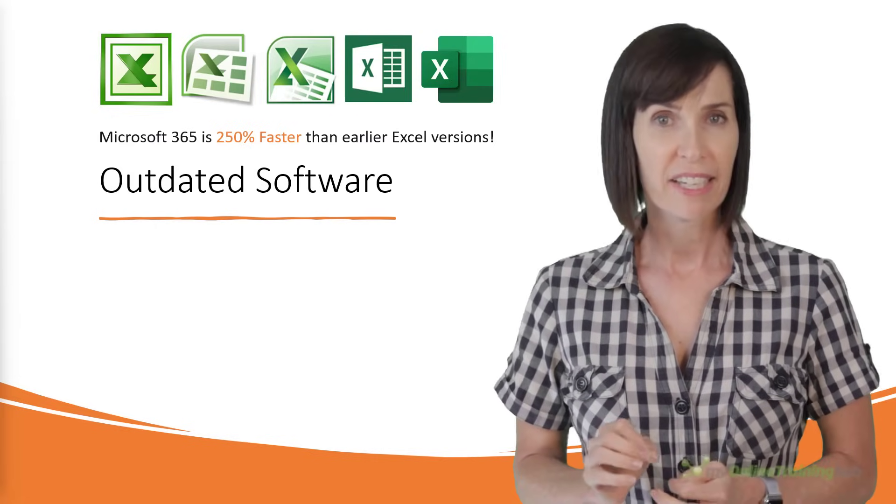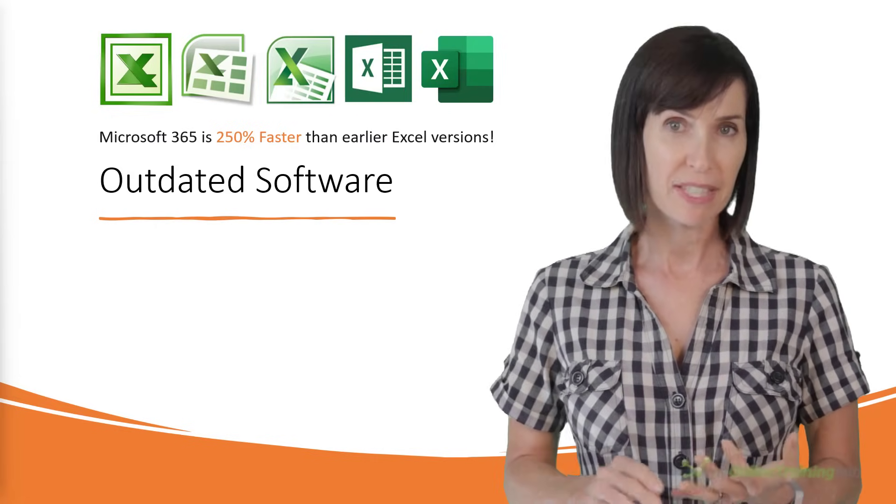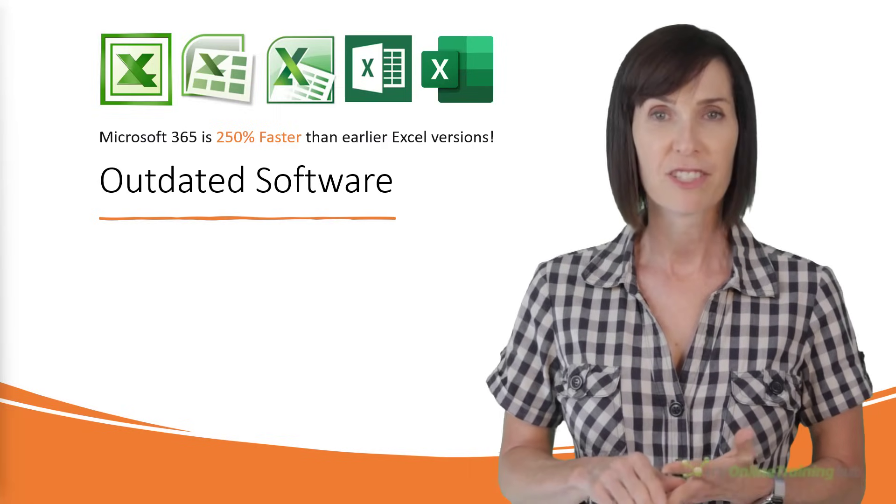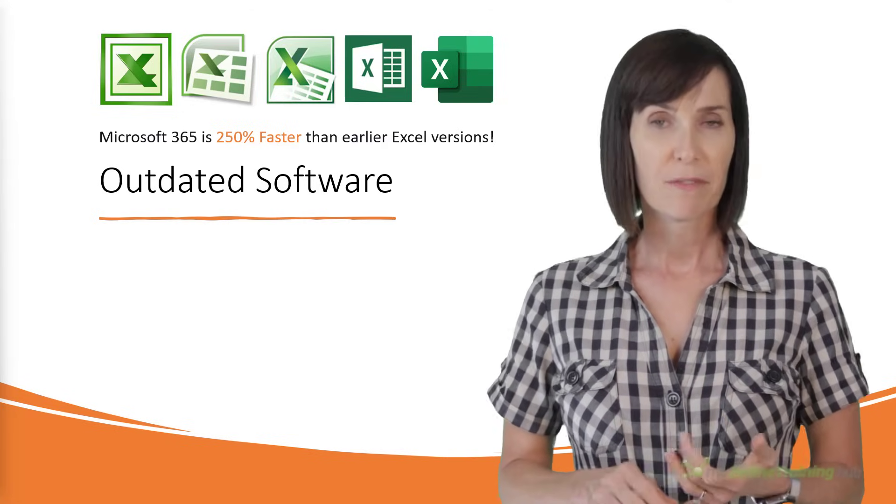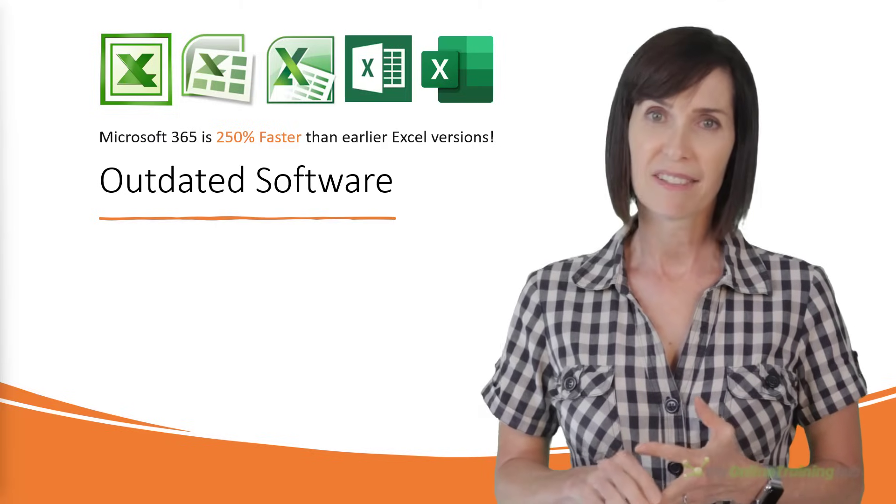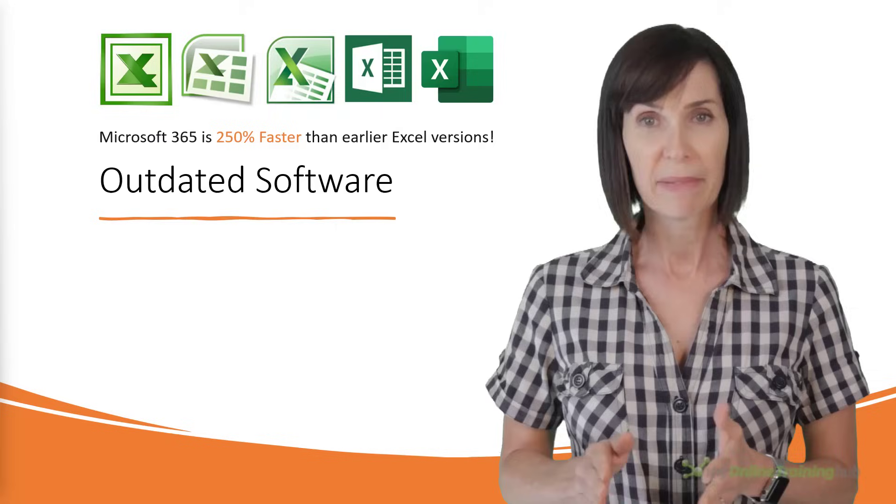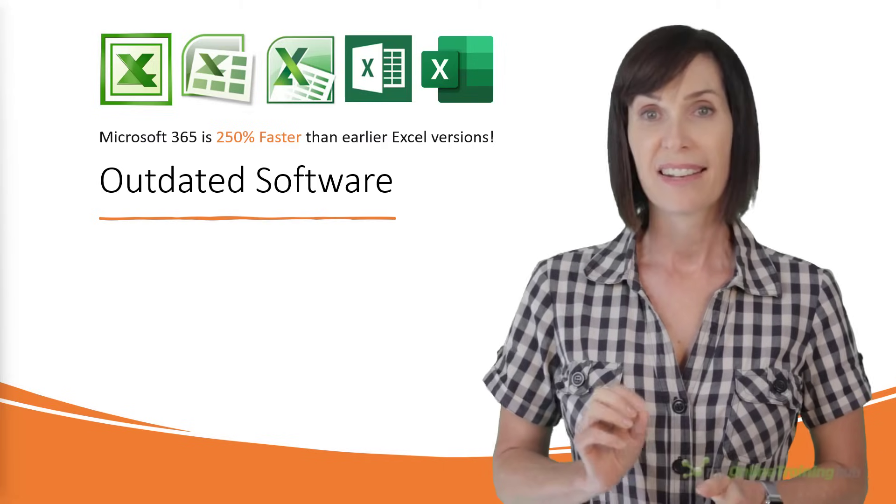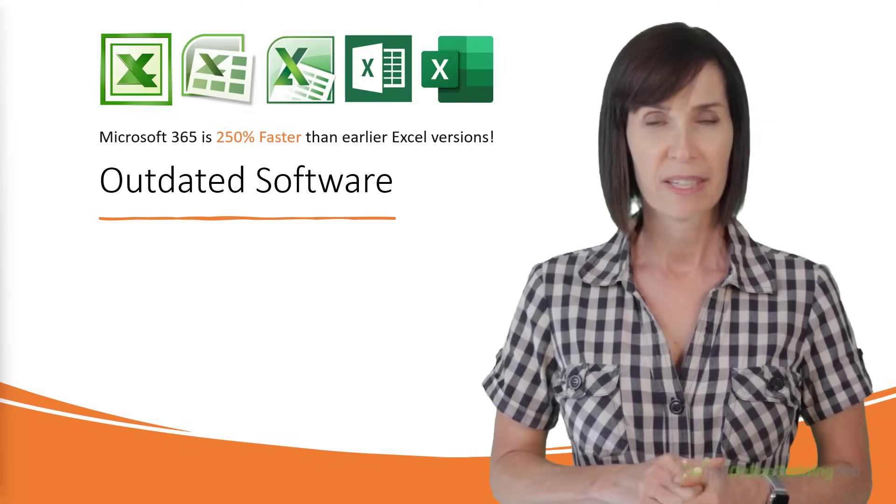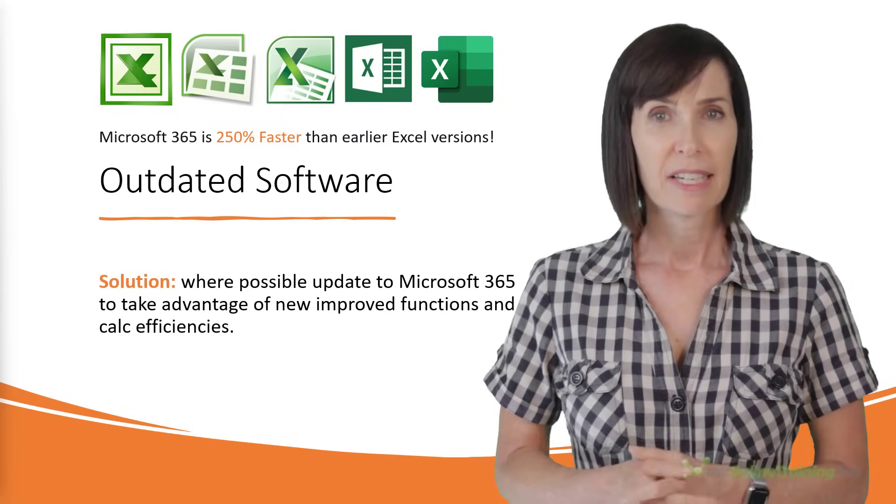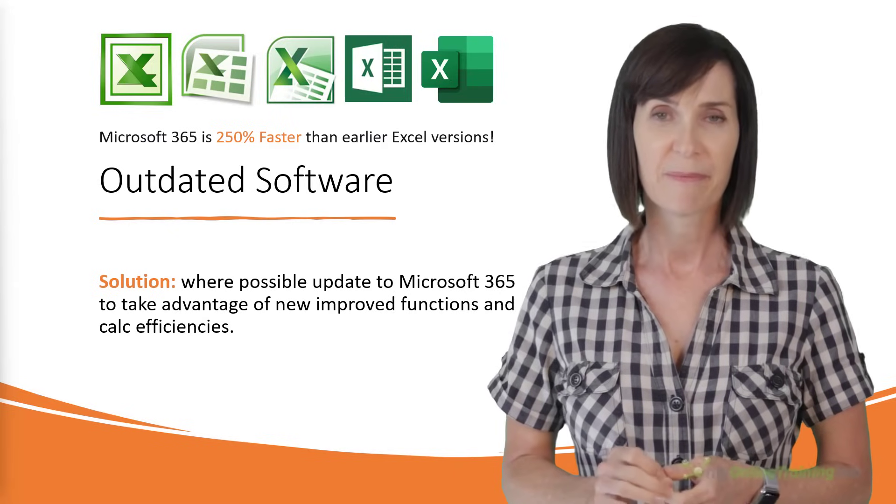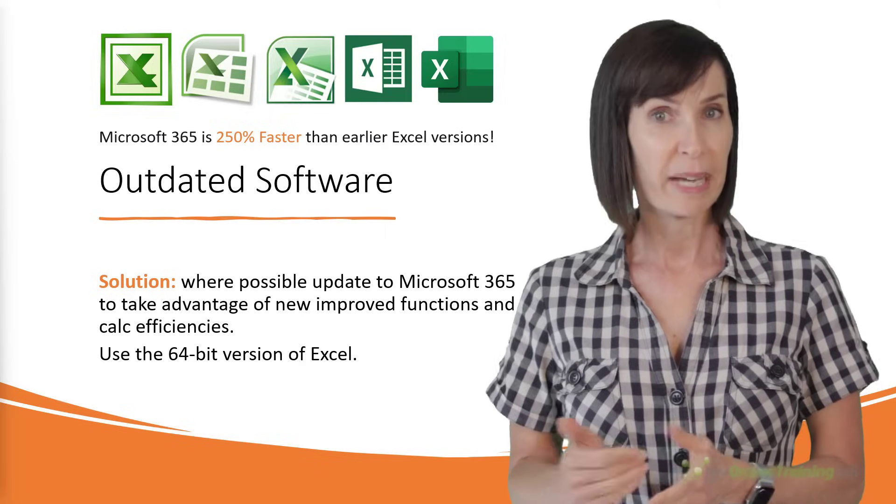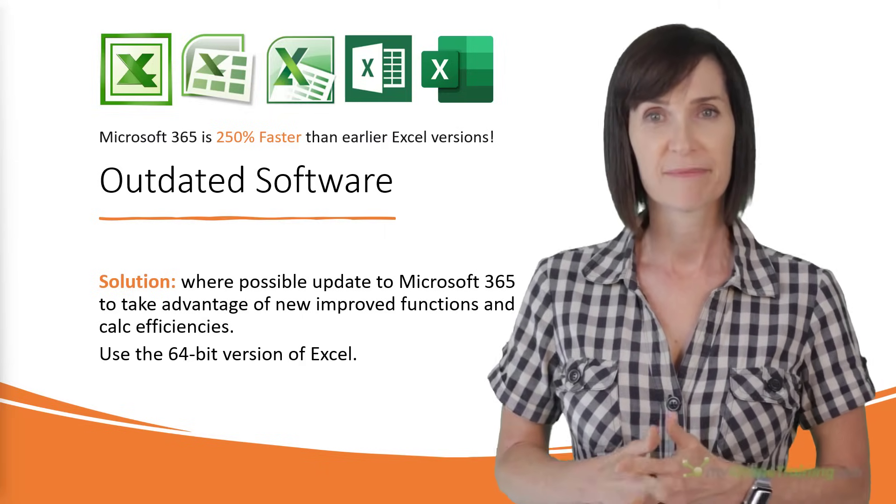Many improvements to Excel's Calc Engine were released for 365 users for SUMIFS, AVERAGEIFS, COUNTIFS, MAXIFS, MINIFS and their singular counterparts, as well as VLOOKUP, HLOOKUP and MATCH. The improvement is dramatic. For example, calculating 1200 SUMIFS, AVERAGEIFS and COUNTIFS formulas, aggregating data from 1 million cells on a 4-core, 2 GHz CPU that took 20 seconds to calculate using Excel 2010, now only takes 8 seconds with 365. So where possible, update to 365, take advantage of the new improved functions and calc efficiencies. Also use the 64-bit version of Excel. The 32-bit version that's commonly used for compatibility with old add-ins only has 2 GB of virtual memory.